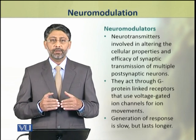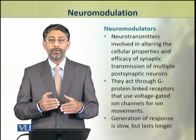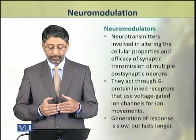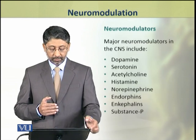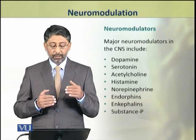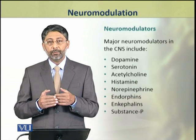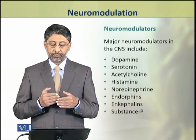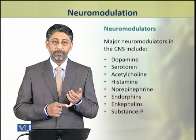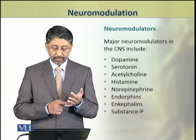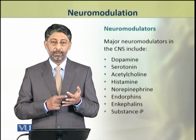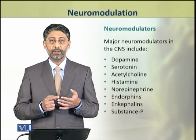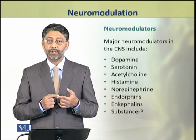ان کا response slow indirect neurotransmitters mechanism سے ملتا جلتا ہے۔ Major neuromodulators جو central nervous system میں produce ہوتے ہیں ان میں dopamine, serotonin, acetylcholine, histamine, norepinephrine, endorphins, encephalines اور substance P شامل ہیں۔